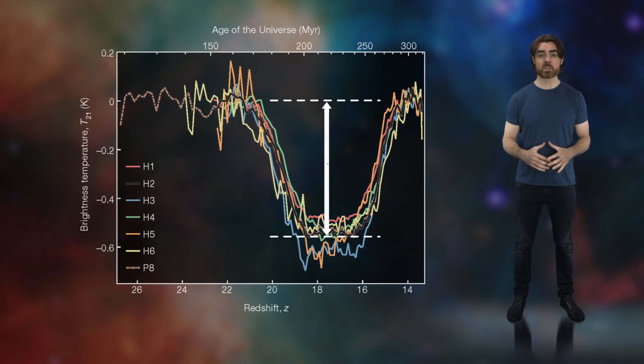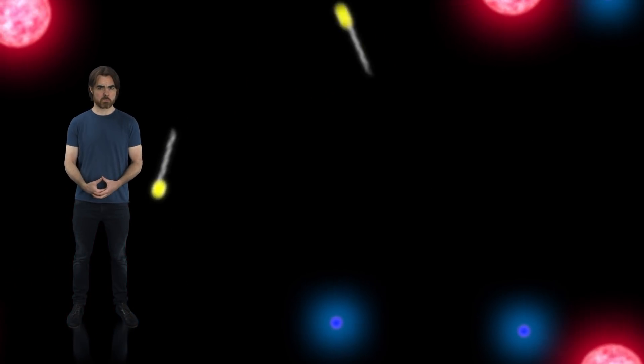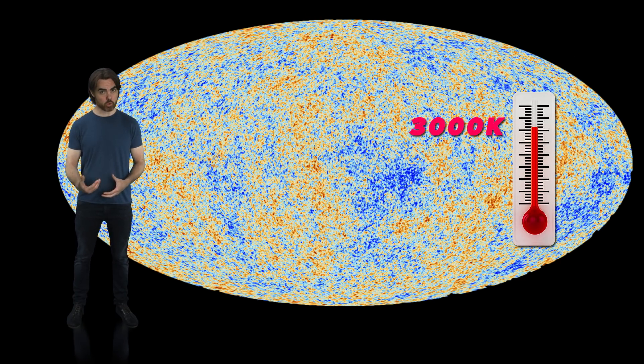But there is one big discrepancy between model and observation. The dip is about twice as deep as we expected. Absorption is happening when we thought it would, but much more of the CMB is being absorbed than we expected. This suggests that the hydrogen doing the absorbing is a lot colder than we thought it would be. Colder gas is better at absorbing 21 centimeter photons. But here's the thing. Our cosmological models can't explain how this early hydrogen gas could possibly be this cold. We know exactly its temperature at the moment of the creation of the CMB, so there's a limit to how much it could have cooled since then.